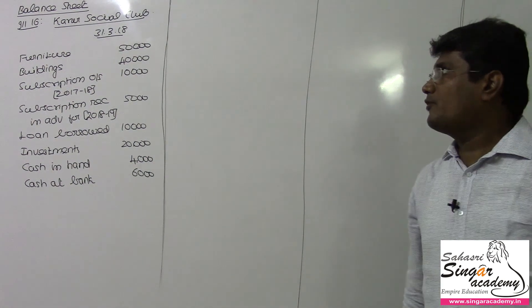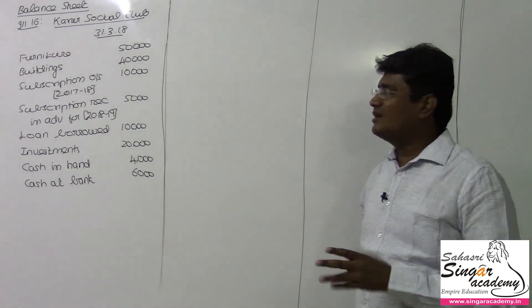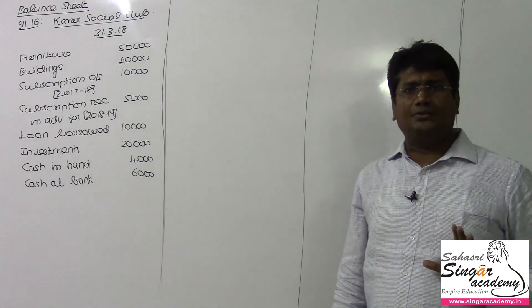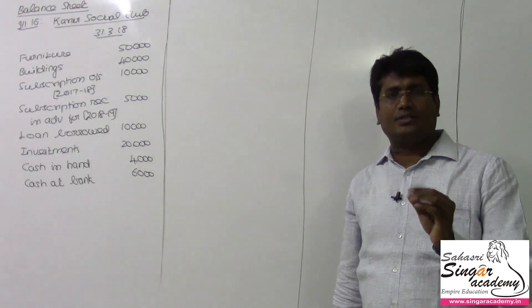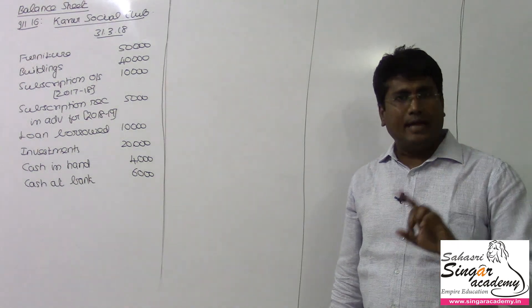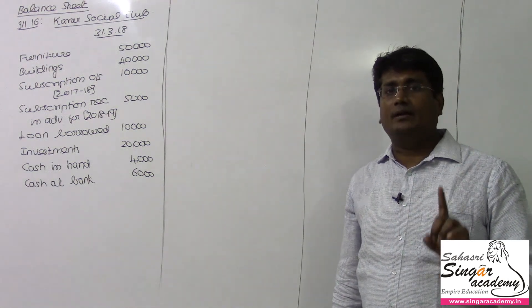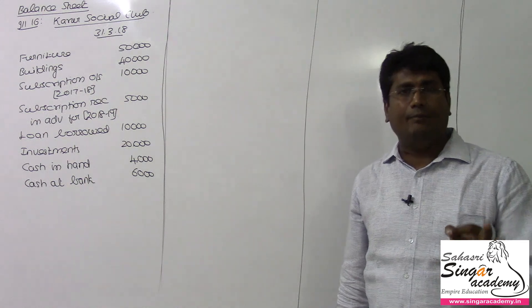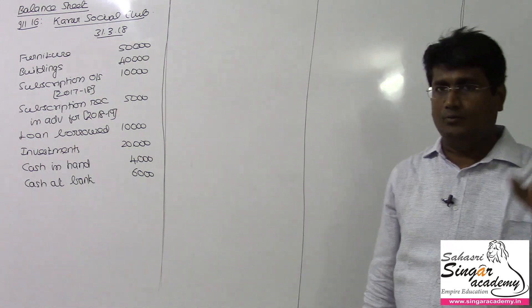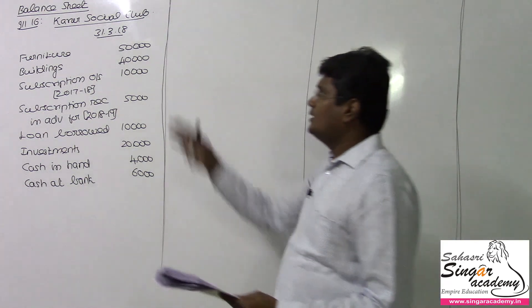Non-profit organization balance sheet — the normal balance sheet has one extra point. The owner's equity section uses terms like capital fund, general fund, or accumulated fund instead of the usual capital terminology.